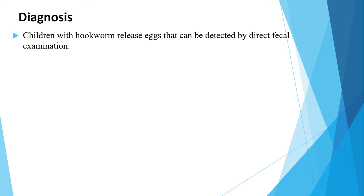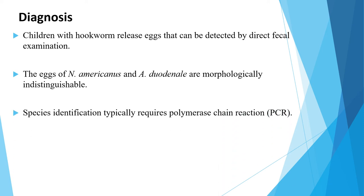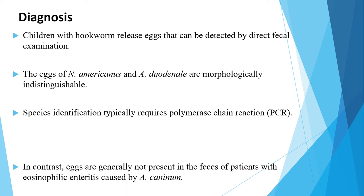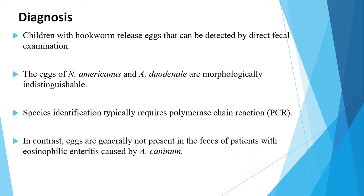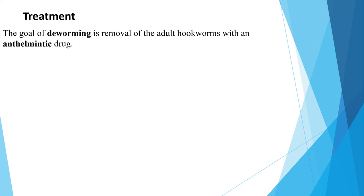Regarding the diagnosis of hookworm infection: infected individuals release eggs that can be detected by direct fecal examination. The eggs of Necator americanus and Ancylostoma duodenale are morphologically indistinguishable; species identification typically requires PCR. In contrast, eggs are generally not present in the feces of patients with eosinophilic enteritis caused by Ancylostoma caninum.